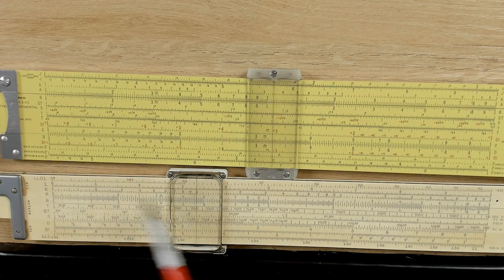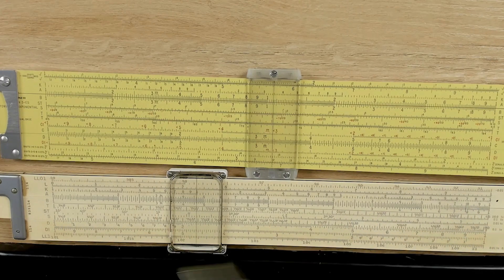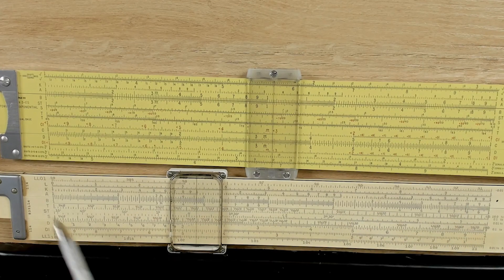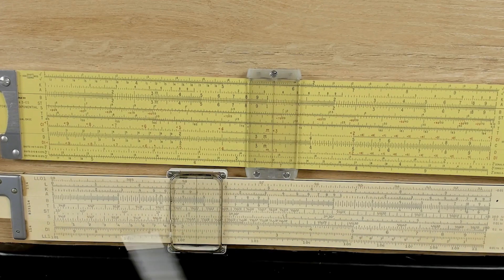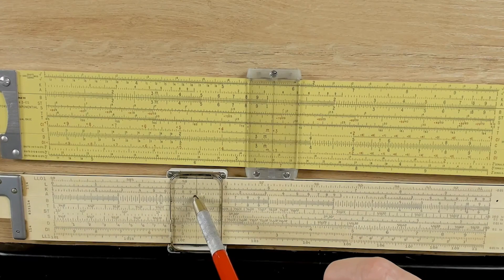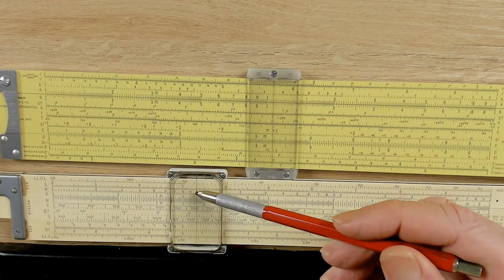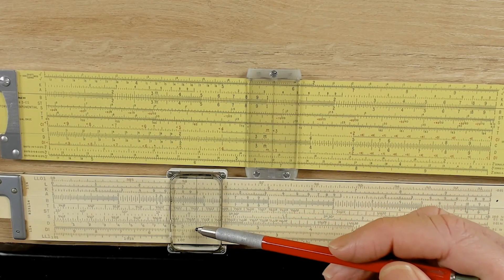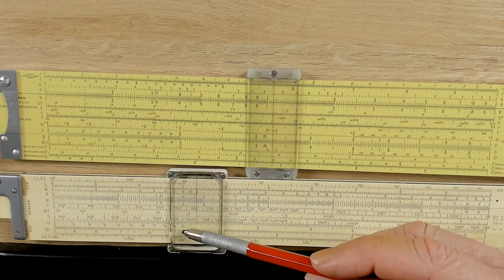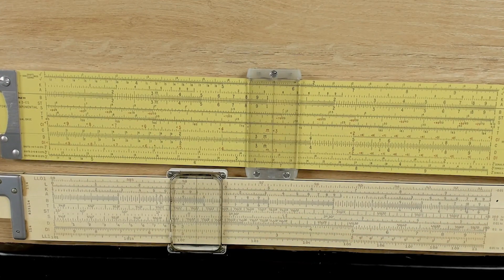Now, notice that this is a 10-inch slide rule, and the distance from the 1 here to the 1 here is 1 third of 10 inches, or 3 and 1 third inches. Now, when we go down directly below the 10, we find the cube root of 10 is approximately 2.16. Let's see if we can maybe get a little bit more precision out of this.